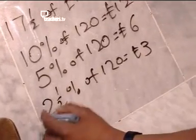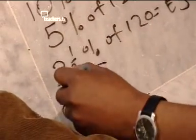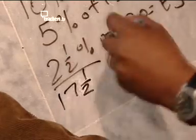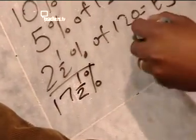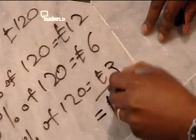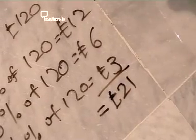10% plus 5% plus 2.5% equals 17.5%. So 17.5% of £120 is equal to £21.